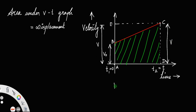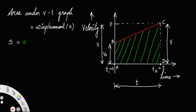The distance between A and D is length t, because at point B the time is t and at point A the time is 0. So this length is t. Now, displacement — let us call it s — s is equal to the area of the trapezium ABCD.